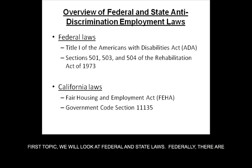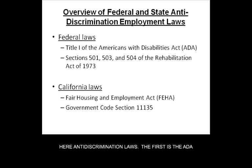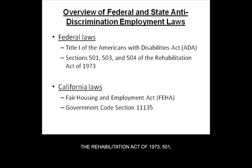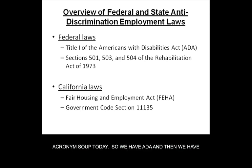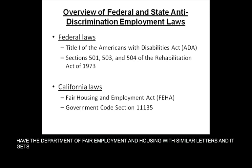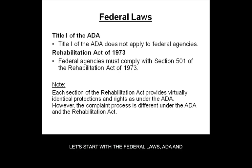Federally, there are two statutes we're interested in for anti-discrimination laws for employment. The first is the ADA — specifically Title I of the Americans with Disabilities Act. The second is the Rehabilitation Act of 1973, specifically sections 501, 503, and 504. In California, we look to two things: the Fair Housing and Employment Act (FEHA), and Government Code Section 11135. We have acronym soup today: ADA and FEHA. FEHA is a trickier one to commit to memory because we also have the Department of Fair Employment and Housing with similar letters.